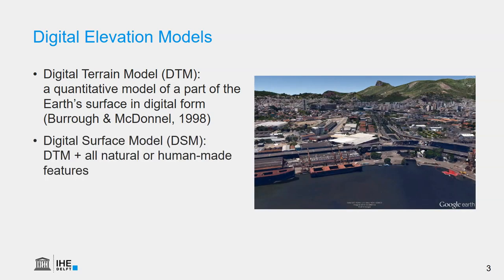A digital surface model, however, is the DTM plus all natural and human-made features on top of it, such as trees and buildings, as we can see on the picture. This is often useful for hydraulic modeling.